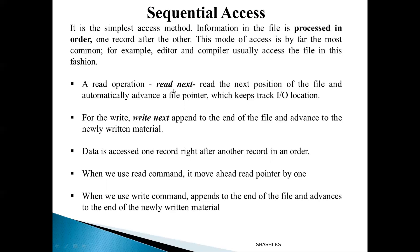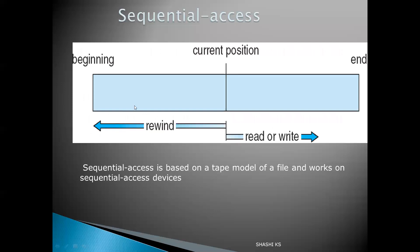The file pointer points to the current position — the read operation reads that record and advances the file pointer to the next record. Similarly, the write operation checks the write pointer position, writes new information, and then advances the write pointer to the end of the newly written content. The read or write pointer always moves ahead one record at a time. Rewinding is also possible — a program can skip backward some number of positions. This resembles a tape model of a file, where records can only be accessed one after the other in order.